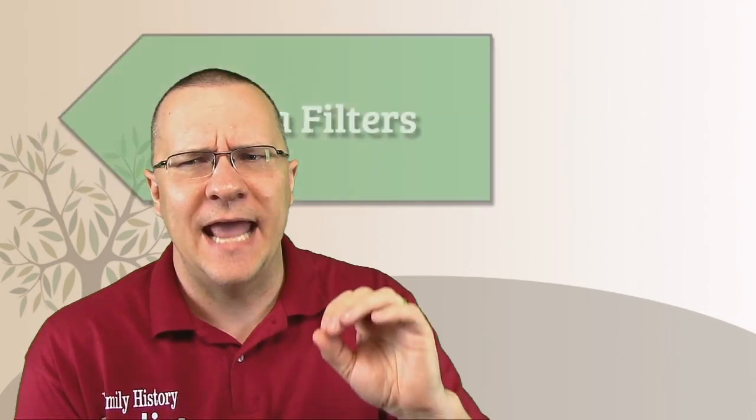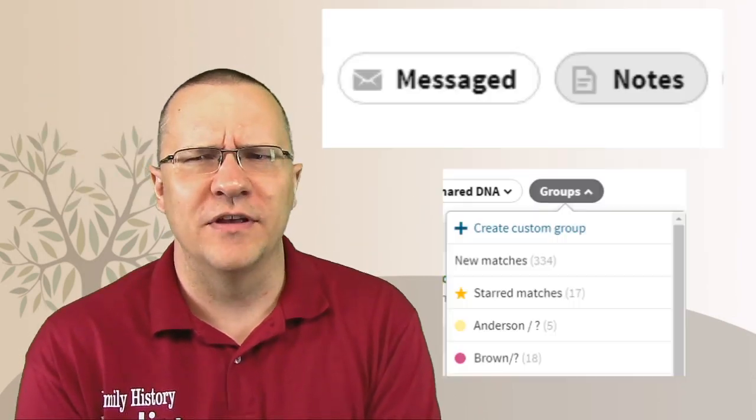That means that we now have MyHeritage at three and Ancestry at one. MyHeritage is beginning to pull away, but will they be able to clinch the victory? Well, we'll see on this last category. And this is what I want to call extra filters. What can you filter with on each platform? And how might that help you?